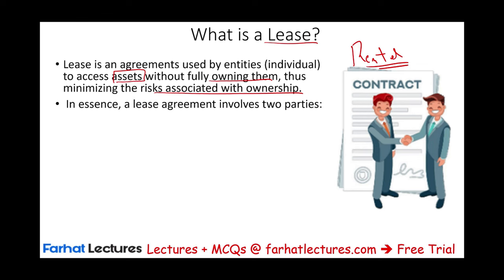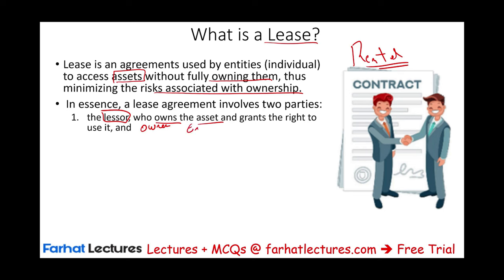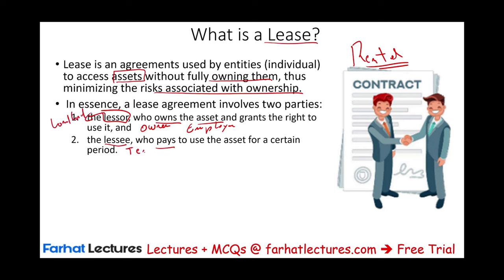In essence, a lease involves two parties. One is the lessor — the party that owns the asset. Think of lessor like employer. You also have a lessee — the person that pays to use the asset for a period of time. If we're thinking about an apartment building, the lessor is the landlord, the owner of the building, and the lessee is the tenant, the person renting the building. Just like employer and employee, we have lessor and lessee. The lessor owns the asset; the lessee uses it. Make sure you don't confuse those.